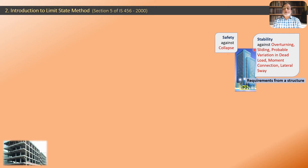The second requirement is safety against collapse. Assuming the structure is stable, it will be properly positioned on its foundation. But a stable structure can still be structurally dangerous if it is not safe. Safety and stability are distinct — safety against collapse means the components (beams, slabs, columns) should themselves be safe and free from the danger of collapse.